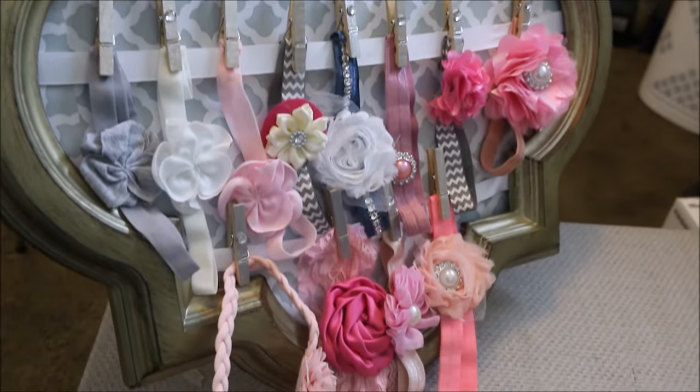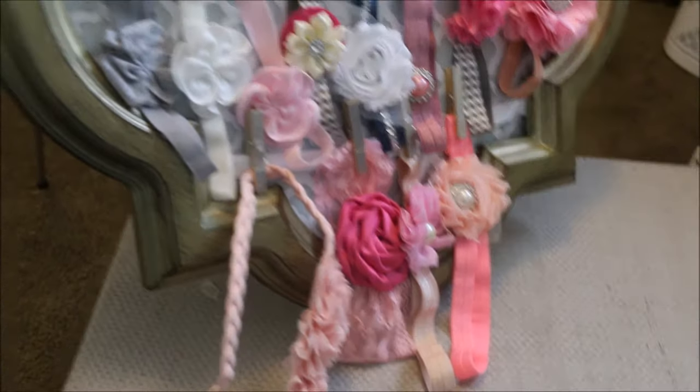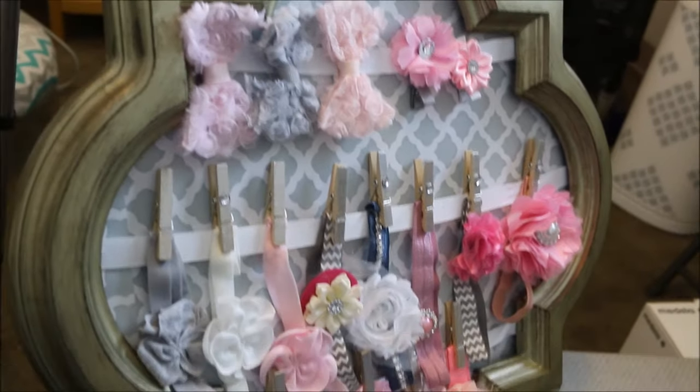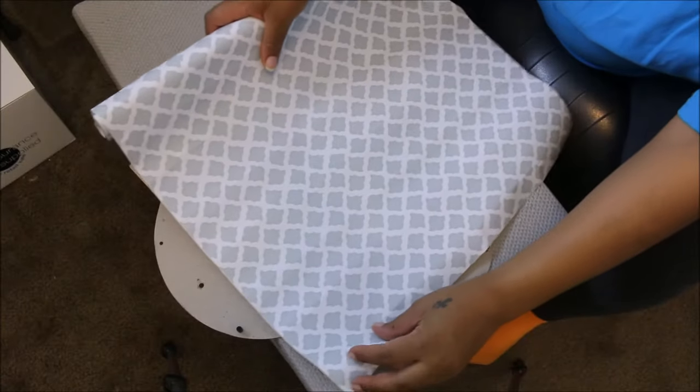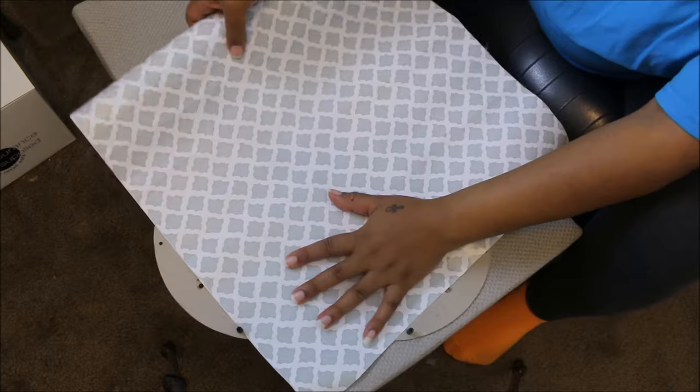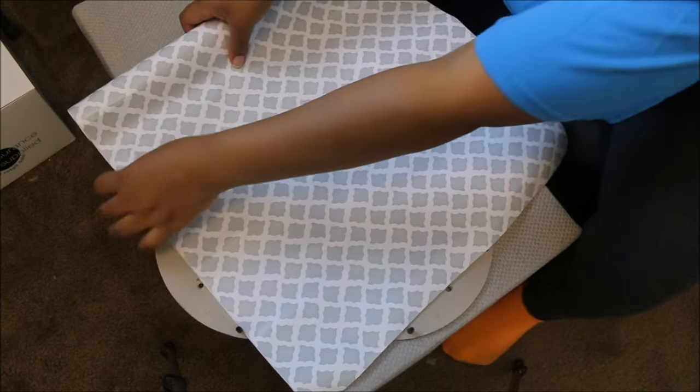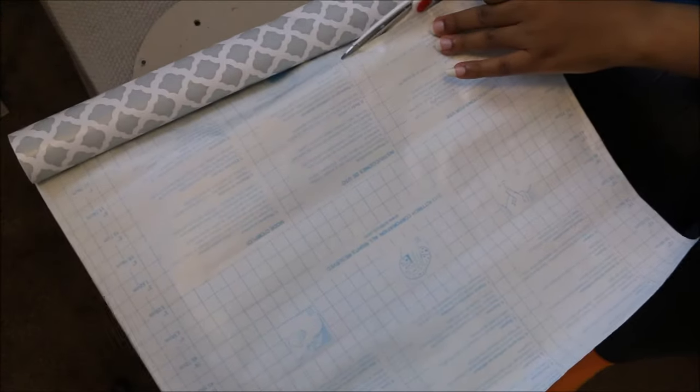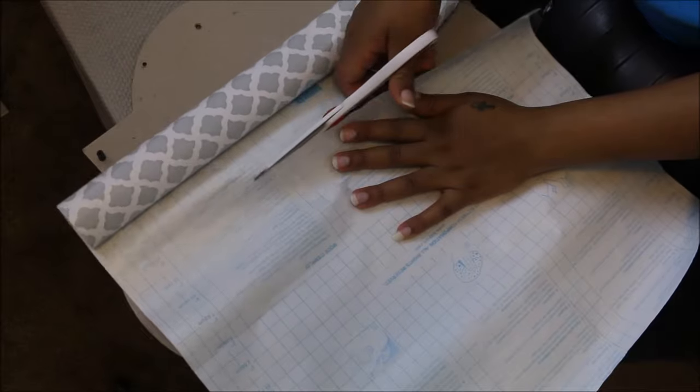So what I used was the frame and also you can use drawer liner or shelf liner, and I got that from Big Lots. Basically you measure it out to fit your frame and on the back there's all these, it's like a grid and you can cut along the line. It's really easy to cut and easy to work with.